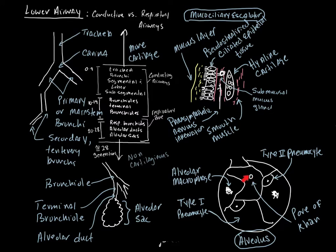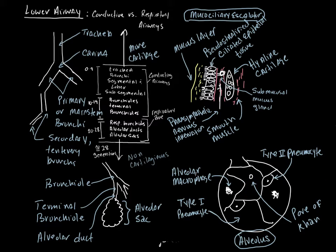Alveoli have little holes called pores of Kohn, which allow an alveolus to communicate with nearby alveoli in an alveolar sac. This allows pressure to equalize throughout the alveoli — if one is getting a little over-distended, air can leak through the pore of Kohn into a nearby alveolus and equalize things out.